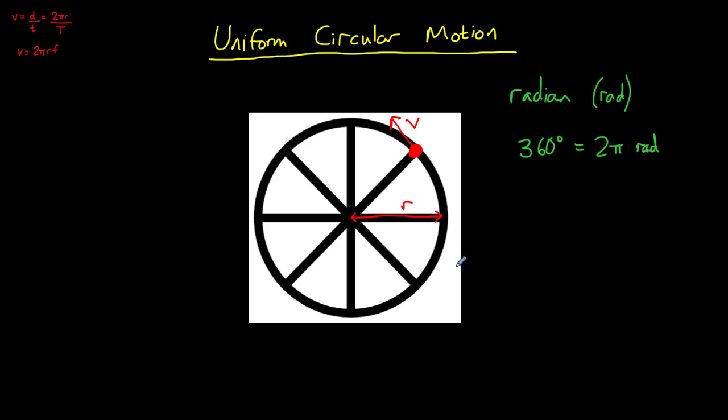We use radians when we describe how far an object has moved in circular motion. We call this angular displacement, and we use the symbol theta. It is effectively the angle through which a rotating object has moved. In one full rotation, it will have an angular displacement of 2 pi radians.